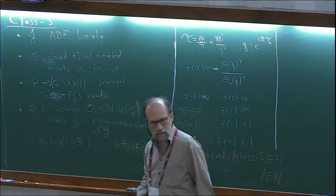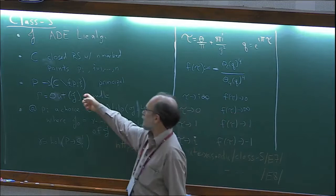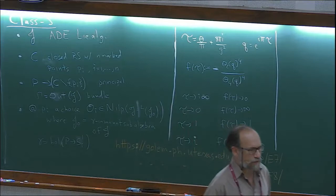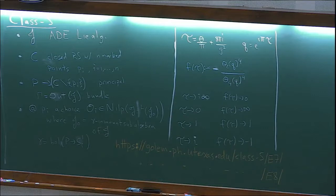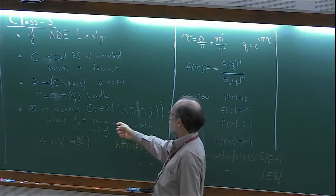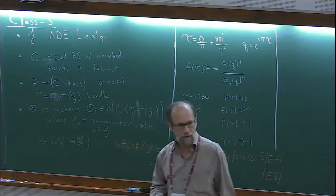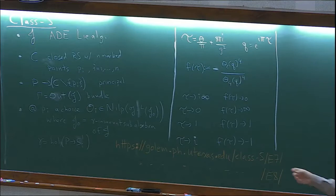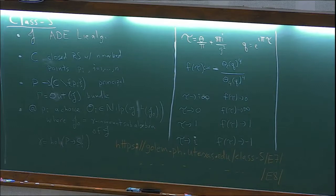A choice of a principal gamma bundle, where gamma is the outer automorphism group of J, on the complement of these points. If P is trivial, this is what we call the untwisted theory — most of what I said last time was about the untwisted case. I'll try to do a little bit about the twisted case today. And at each of the marked points there's a decoration, which is a choice of nilpotent orbit either in the Lie algebra J, if P restricted to the circle is trivial, or in the Langlands dual of the invariant subalgebra, if P restricted to the circle is non-trivial.